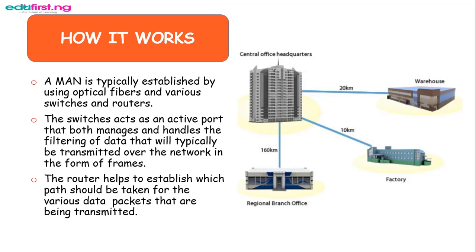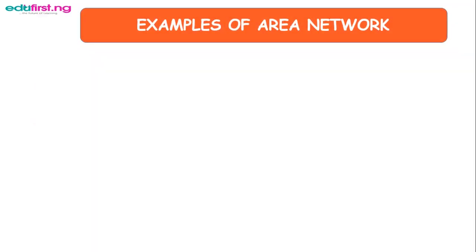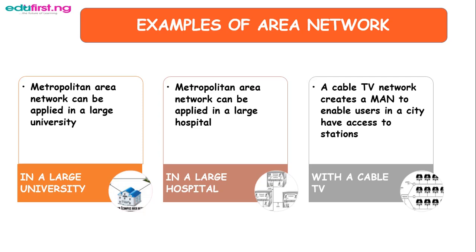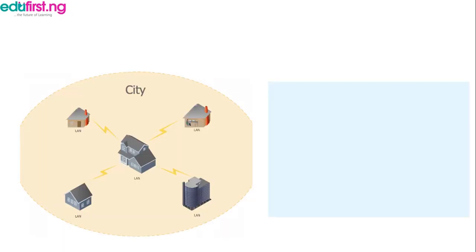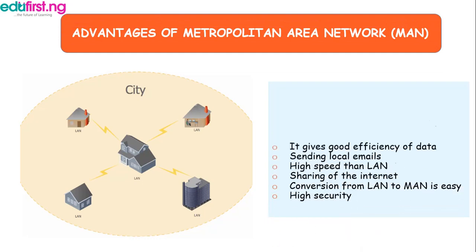Examples of metropolitan area networks: they can be applied in a very large university, used in a large hospital, and also a cable TV network that creates a metropolitan area network to enable users in a city to have access to various stations on the network.